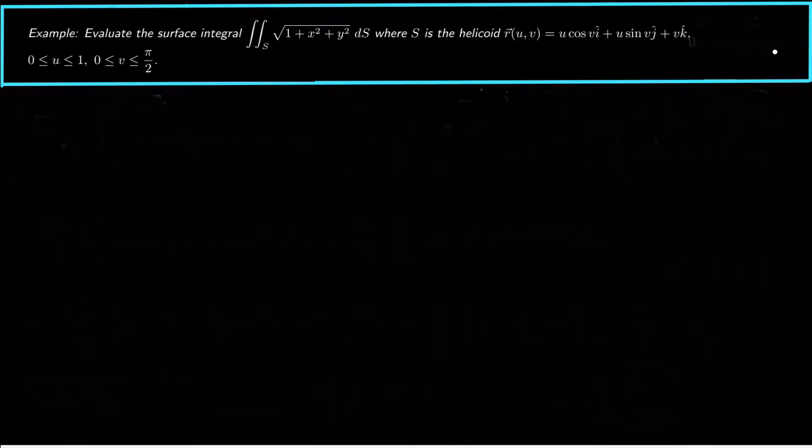Hey guys, what's up? Today we have another surface integral of a scalar function, and we want to integrate the function √(1 + x² + y²) ds, where s is the helicoid r(u,v) = u·cos(v) î + u·sin(v) ĵ + v k̂, with u ranging from 0 to 1 and v ranging from 0 to π/2.